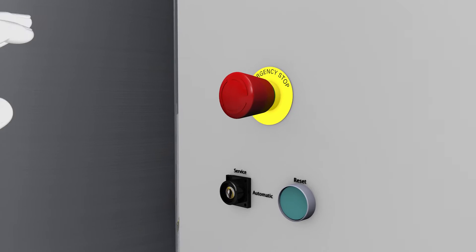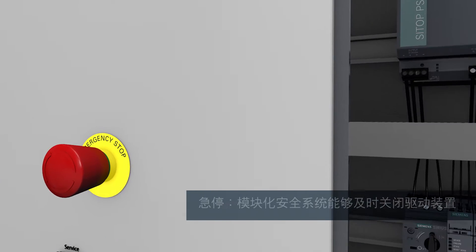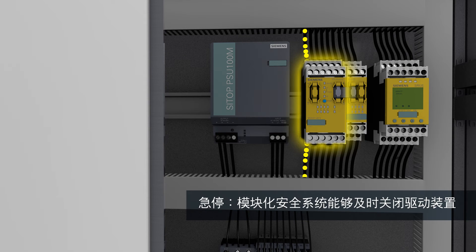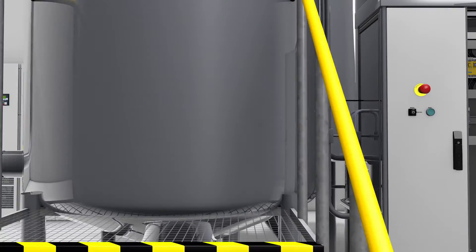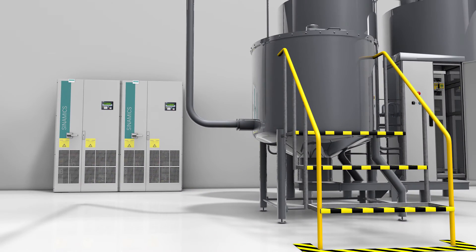Emergency stop can be actuated at any time if a hazard arises. In this case, the modular safety system ensures shutdown of the blender, with the Sinamics G150 activating the safety function Safe Torque Off.